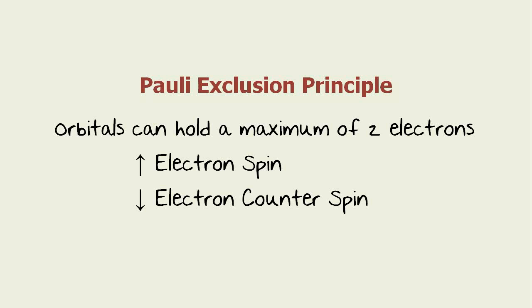We'll review by first taking a look at orbitals and the Pauli exclusion principle. It says that an orbital can hold a maximum of two electrons and we refer to those electrons as a spin and a counter spin.